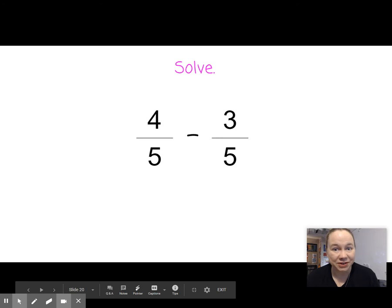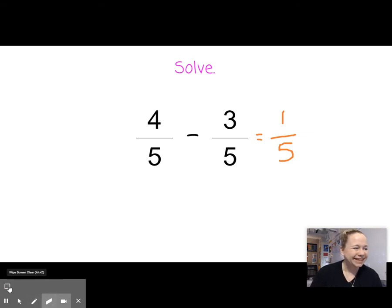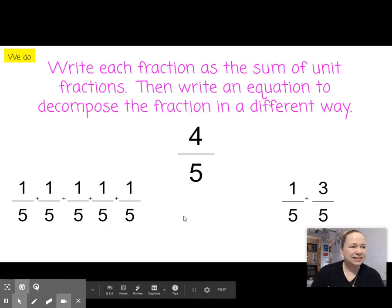How about this one? Go ahead and try it. Okay, so the denominators are the same, so we're going to keep the denominator the same. Four minus three equals one. Did you get one-fifth? High five. Don't actually hit your computer, though. That would be bad.